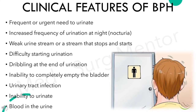Major clinical features of benign prostatic hyperplasia are frequent or urgent need to urinate, increased frequency of urination at night or nocturia, weak urine stream or a stream that stops and starts, difficulty starting urination, dribbling at the end of urination, inability to completely empty the bladder, urinary tract infection, inability to urinate, and blood in the urine.